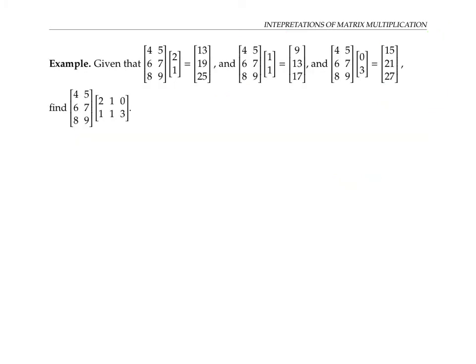Let's apply this column interpretation in an example. Suppose we have a matrix A, and we know that A times a first column vector gives a certain result, and A times a second column vector gives another result, and A times a third column vector gives yet another result. The dimensions and arithmetic work out fine.